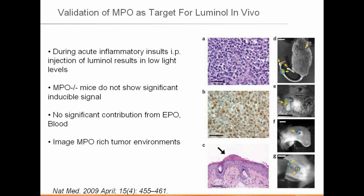Another area published on a while back is looking at acute inflammation and honing in on myeloperoxidase, which is present at the site of activated neutrophils and macrophages. These researchers in Nature Medicine wanted to understand whether luminol — familiar from western blots in molecular biology — could be used in vivo to selectively target the activation of myeloperoxidase. By comparing induced acute inflammation in myeloperoxidase-positive versus myeloperoxidase-negative mice, they were able to show that injecting and imaging with luminol allowed selective imaging of this important enzyme and mediator of inflammation.